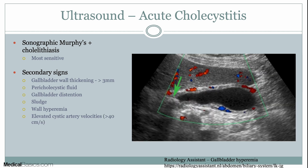The next finding is gallbladder wall hyperemia, which essentially means the wall has more vascularity going to it. Anything that's inflamed is going to be much more vascular with increased blood flow, so you're going to have increased color Doppler flow — that's what all these little red and blue foci mean. You can also measure velocities of the cystic artery, which is the main artery supplying the gallbladder; anything over 40 cm/s for cystic artery velocity is considered abnormal.